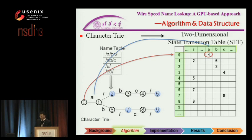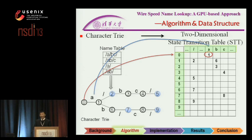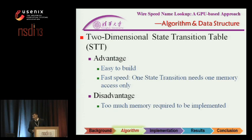In the STT, the leftmost column records the number of states and the top row records the input characters. By this, we can find the next state transition with only one memory access. STT is easy to build and fast, but it is too memory-consuming because the STT is usually very sparse.